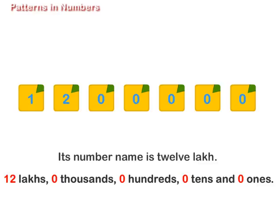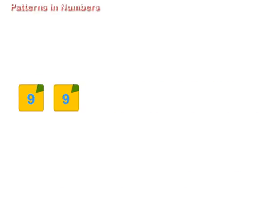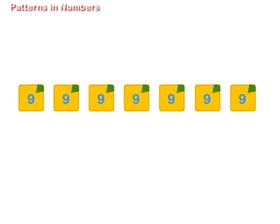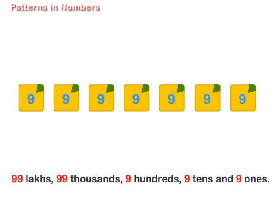Its number name is 12 lakh. 99,99,999 stands for 99 lakhs, 99 thousands, 9 hundreds, 9 tens and 9 ones. Its number name is ninety-nine lakh ninety-nine thousand nine hundred and ninety-nine. This is the greatest number of 7 digits.